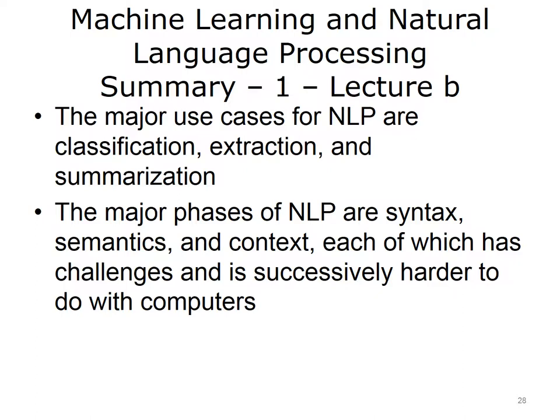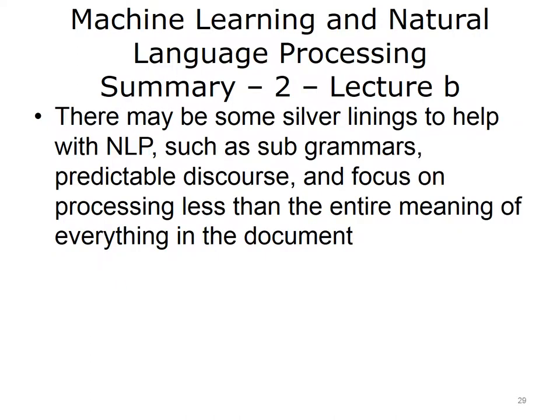This concludes Lecture B of Machine Learning and Natural Language Processing. In summarizing this lecture, we learned that the major use cases for NLP are classification, extraction, and summarization. The major phases of NLP are syntax, semantics, and context, each of which has challenges and is successively harder to do with computers. And there may be some silver linings to help with NLP, such as subgrammars, predictable discourse, and focusing on processing specific elements rather than the entire meaning of everything in the document.